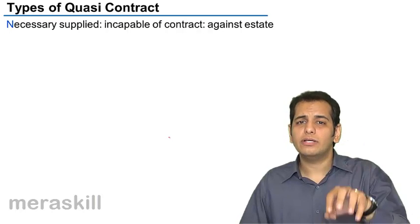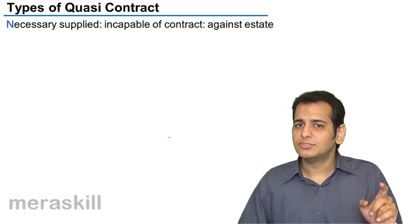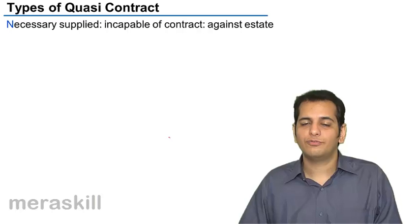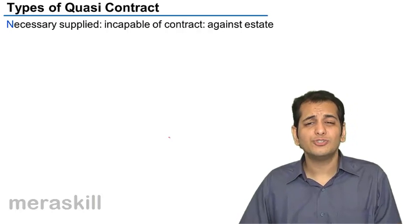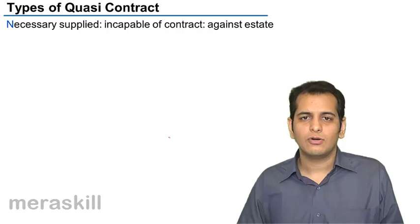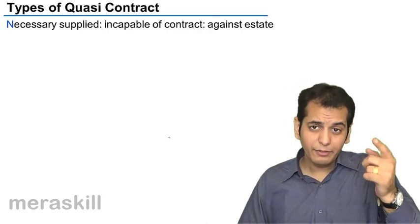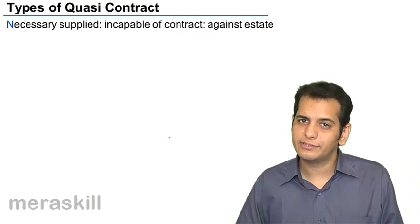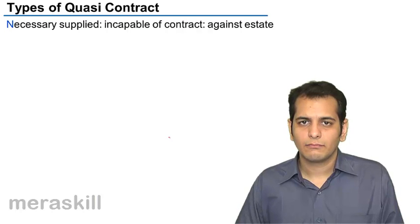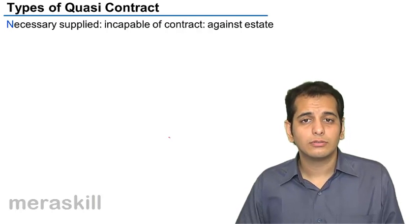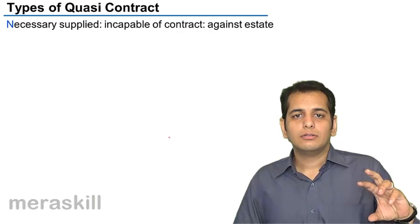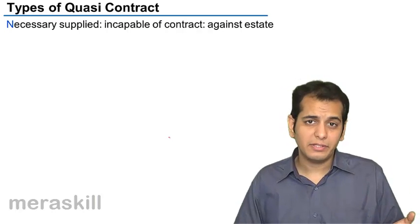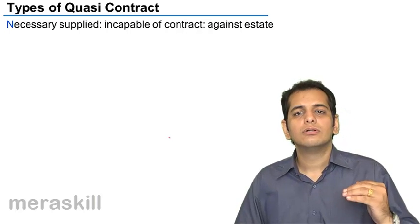Here, the court is trying to prevent unjust enrichment and to follow the principle of equity. Because you should not become poor at the income or profit of another. It would be your loss if you could not recover the amount you've spent for the necessaries that you supply. So it becomes the liability of that unsound person or the minor to pay you back.